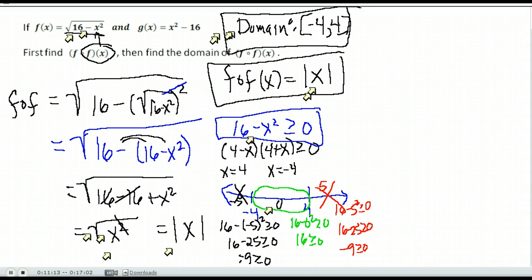For square roots, to find their domain, you set the quantity underneath greater than or equal to zero and solve. Our domain is from negative 4 to 4, including those numbers.